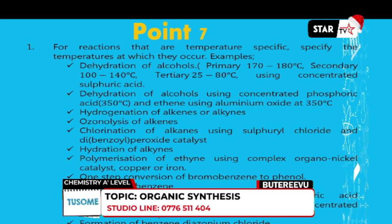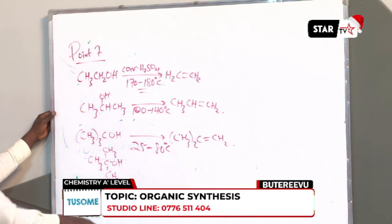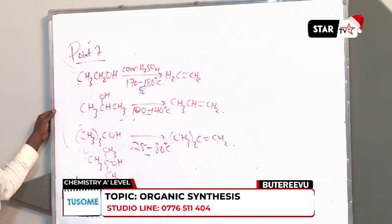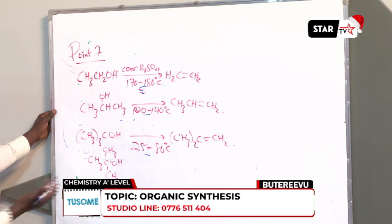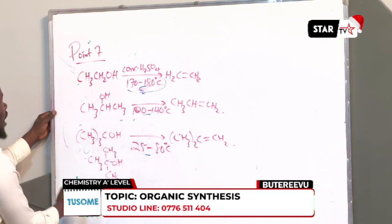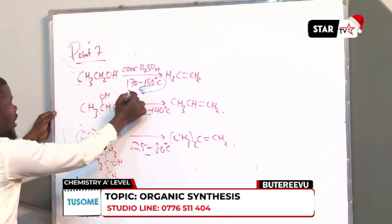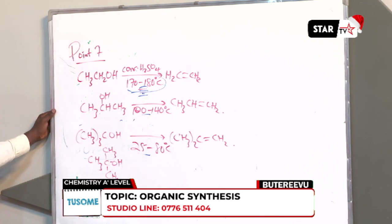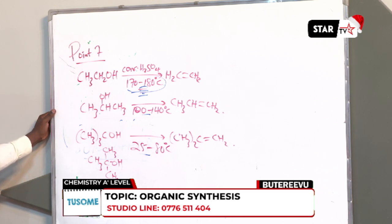However, we don't have to memorize all these temperatures, because by the time we reach a temperature of 180 degrees, every alcohol will have been dehydrated. So, to avoid unnecessary memorization, you can use 170 to 180 degrees Celsius to dehydrate any alcohol — whether primary, secondary, or tertiary.